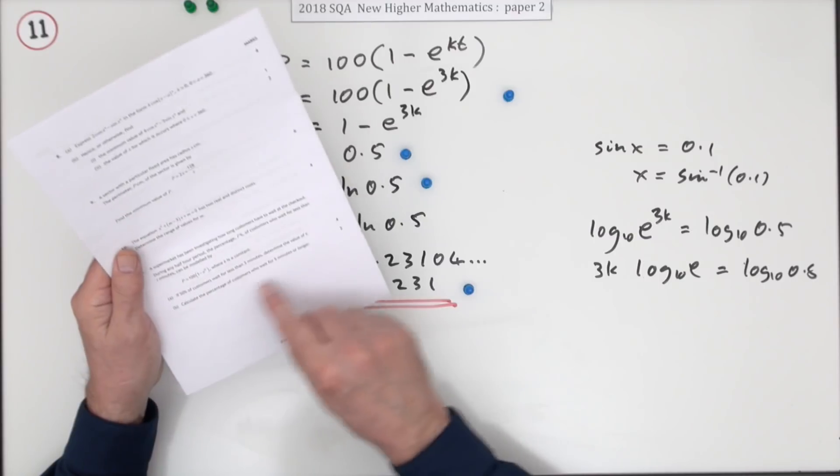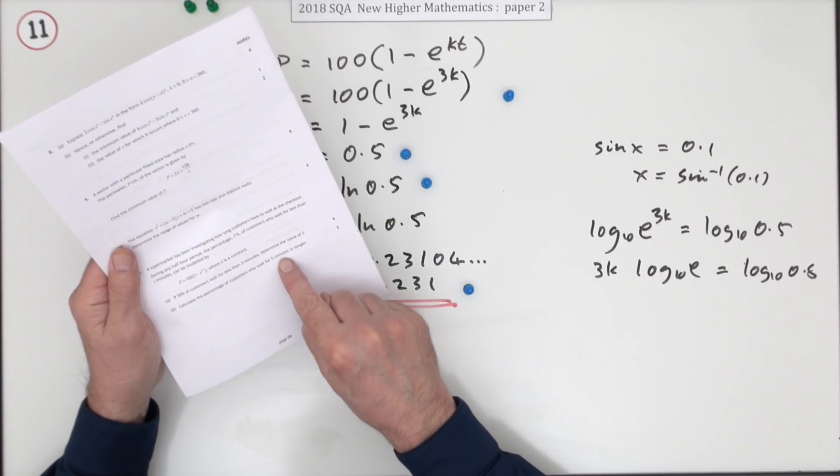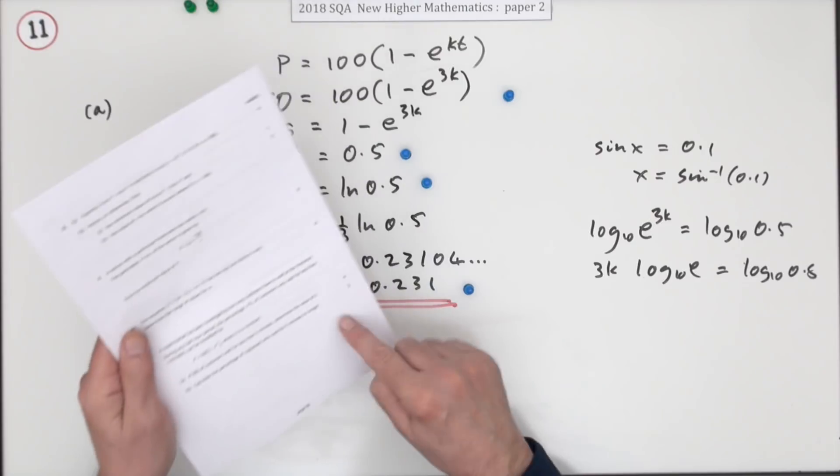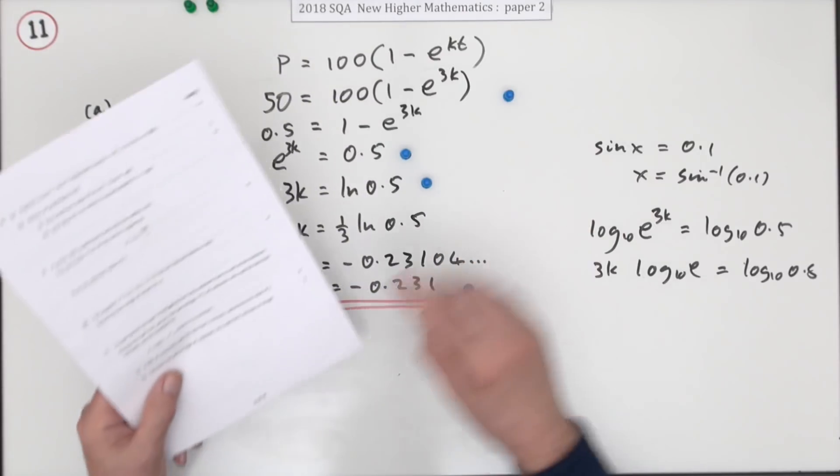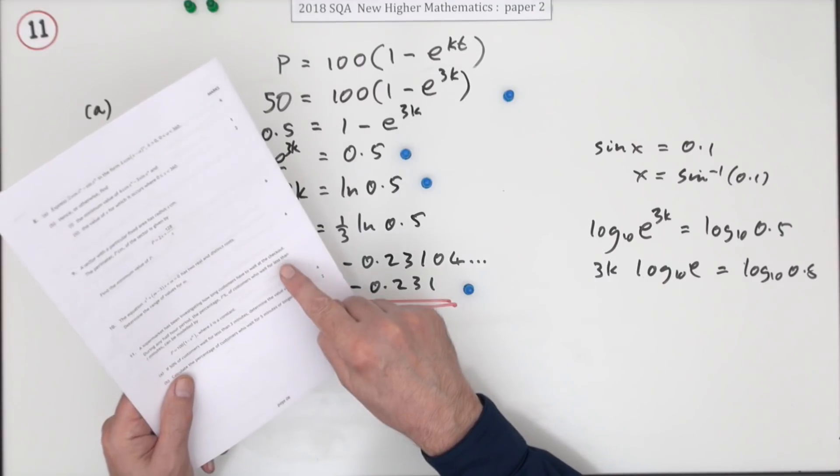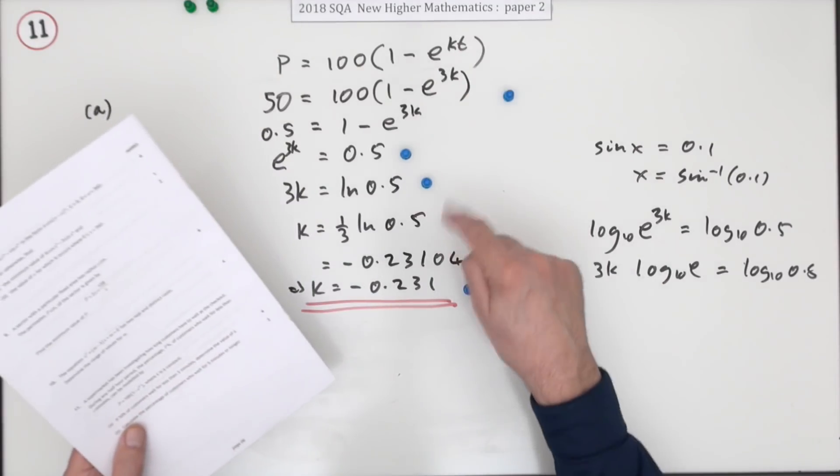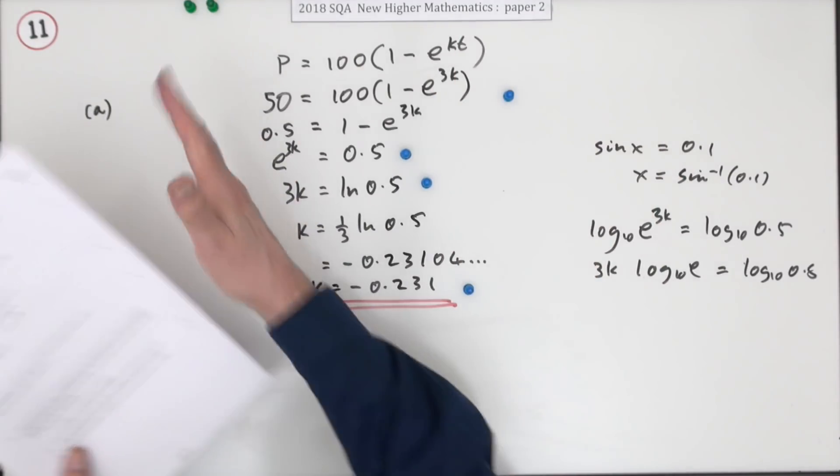So part b then. Calculate the percentage of customers who wait for five minutes or longer. You have to watch that five minutes or longer, because you may not have noticed that in the first part it said for less than t minutes, not less than or equal to, but less than t minutes.